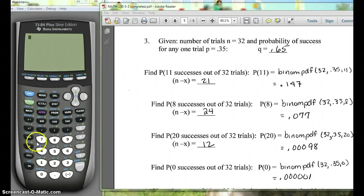Hi, in this video we're going to talk about how to use our calculator to find probabilities using the binomial distribution. This goes with section 5.3 in our notes. Here we have a situation where we've got 32 trials and the probability of success is 0.35.